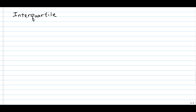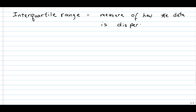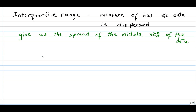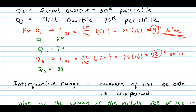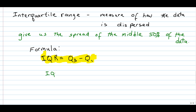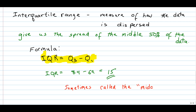As long as we're talking about quartiles, we can discuss a measure of dispersion called the interquartile range. This number gives us the spread of the middle 50% of the data values. The formula is: IQR equals Q3 minus Q1. For our example, Q3 is 84 and Q1 is 69, so the interquartile range is 84 minus 69, which equals 15. This number is sometimes called the middle 50, and it is useful since it is not influenced by extreme values — it just looks at the middle spread of the data.